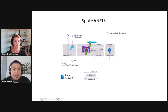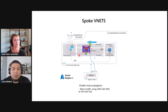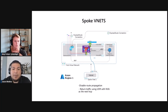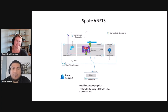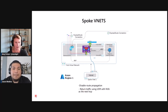Now we talk about our spoke VNets. What we recommend is to have a route table attached to all your subnets. Inside each subnet, you want to have a static default UDR entry — a default route — back up to your NVA. But you also want to disable route propagation. It is very important that you disable route propagation on the spoke VNets. If you do not do that, you will learn more specific routes and essentially bypass your firewall NVA. So disable route propagation and just have the one default route UDR entry back up to your NVA.